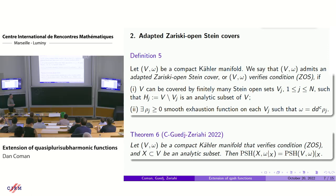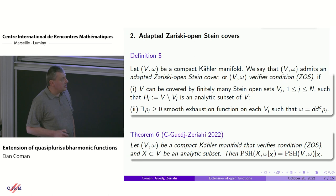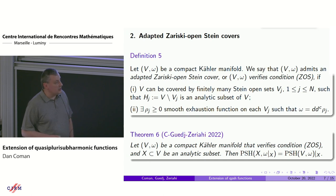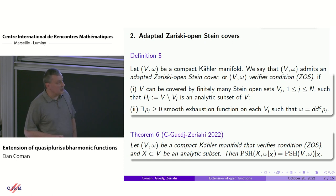If you change the Kähler form or class, it might still have the same property for a different omega with a different cover V_j. In this setting, if you have such a compact Kähler manifold verifying the ZOS condition and X any analytic subset, then the extension property holds for omega and X — any omega-plurisubharmonic function on X extends to a global omega-plurisubharmonic function on V.